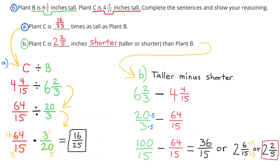B. Plant C is 2 and 2 fifths inches shorter than plant B. My reasoning: the taller plant minus the shorter plant. 6 and 2 thirds minus 4 and 4 fifteenths, written as 20 thirds minus 64 fifteenths. To subtract, I need a common denominator, so I multiply the 3 by 5 to get 15, and also multiply 20 by 5 to get 100. So 100 fifteenths minus 64 fifteenths equals 36 fifteenths, or 2 and 6 fifteenths, which is 2 and 2 fifths. Plant C is 2 and 2 fifths inches shorter than plant B.